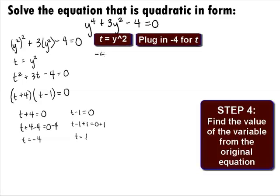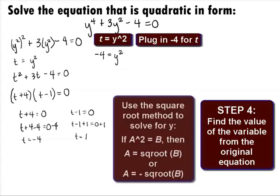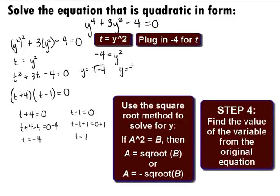Substituting in negative 4 for t, we get negative 4 equals y squared. It looks like we need to use the square root method to solve for y, which means we will take the square root of both sides and end up with two equations: y equals the square root of negative 4, and y equals the negative square root of negative 4. Simplifying, we get y equals 2i and y equals negative 2i.